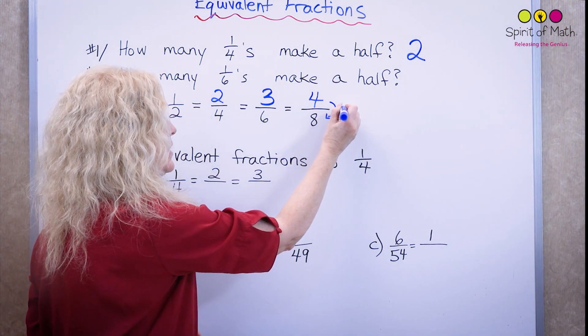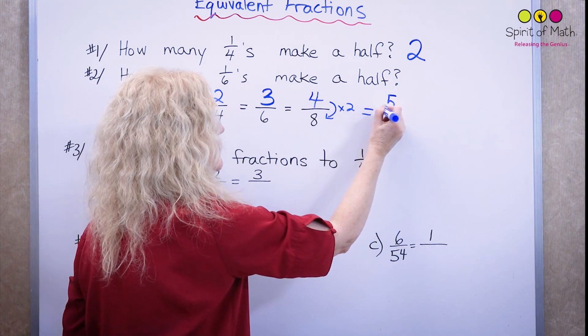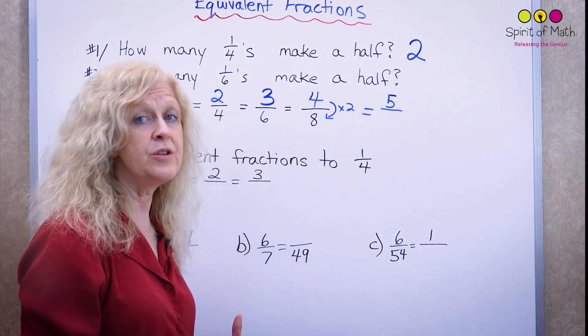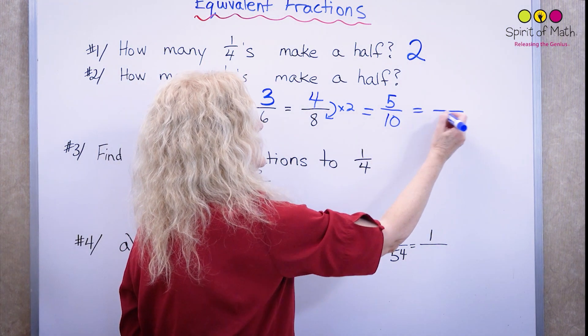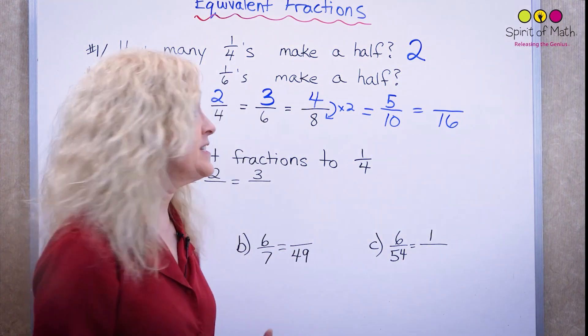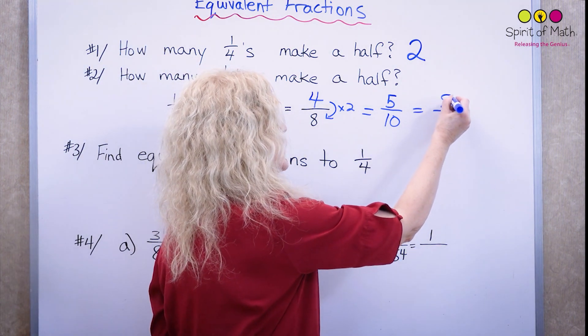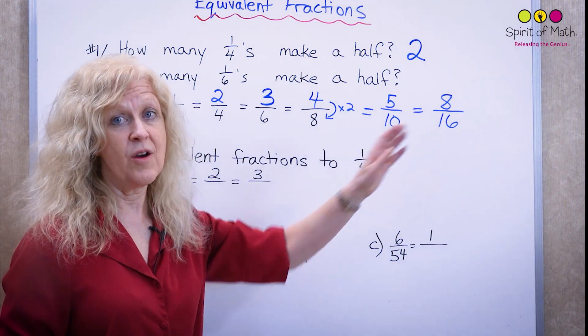So if I gave you the top number and said five, five what would be equal to a half? Five-tenths. If I said to you, let's do 16 in the denominator now, what would be half of 16? That would be eight. So eight times two is 16. These are all equivalent.